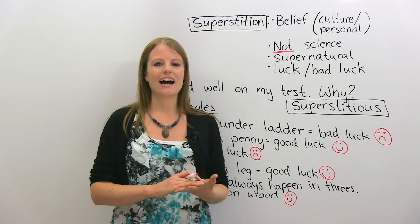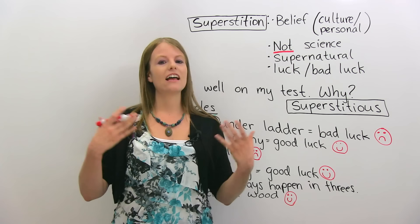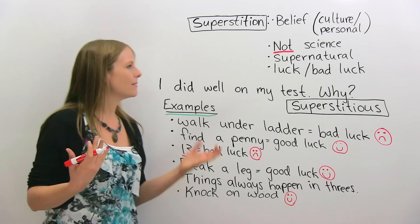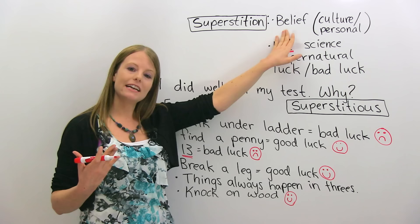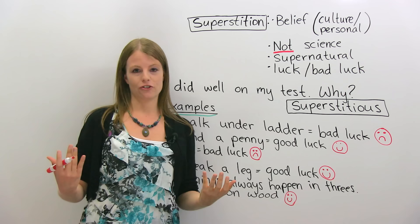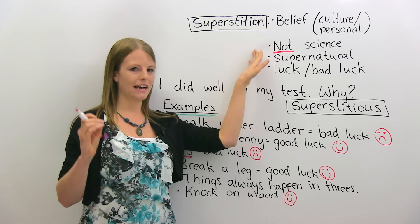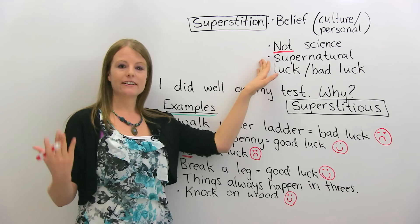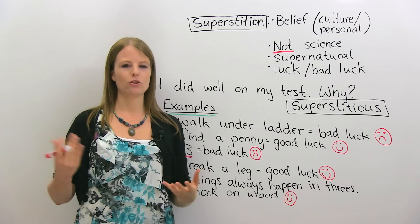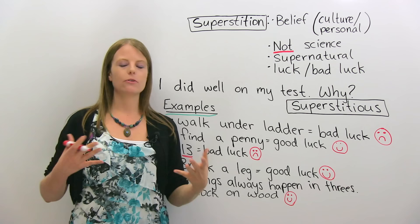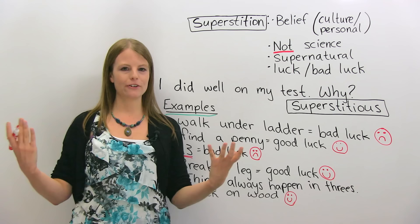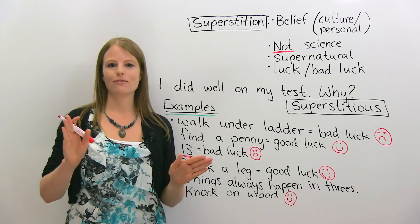First, I want to tell you about superstitions. I love this topic — I think it's very interesting. A superstition is a belief, and this belief is usually cultural but can also be personal. This belief is not based in science, so it's not scientific. Oftentimes when we're talking about superstitions, we're talking about supernatural things: good luck, bad luck, curses — things from our culture's history and a different way of seeing the world. When I give you examples, you will start to really understand what a superstition is.